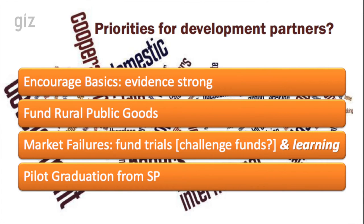What are the priorities for development partners? Encourage the basics — there's very strong evidence that rural investment climates and rural public goods are the sine qua non necessary conditions for growth. Fund rural public goods in low-income countries where public budgets do not extend sufficiently. On market failures, encourage trials and innovations through challenge funds, but please invest in the learning. DFID is spending a lot of money on interesting challenge funds and initiatives across Africa — but is it spending enough on learning? I suspect not. And pilot and learn from graduation schemes on social protection.